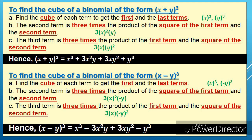To find the cube of a binomial of the form cube of x minus y: letter a, find the cube of each term to get the first and the last term; letter b, the second term is three times the product of the square of the first term and the second term; letter c, the third term is three times the product of the first term and the square of the second term. Hence, we have x cube minus 3x squared y plus 3xy squared minus y cube.